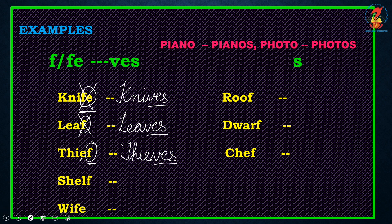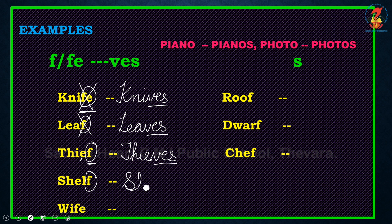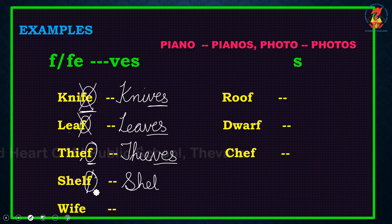In the previous video, we had learnt about the words which are ending with SH, CH, S, SS, X, and O. What happens to these words if they are ending with these letters — we will just add ES to the word to make it a plural form. Let's get to the examples and see what it is.